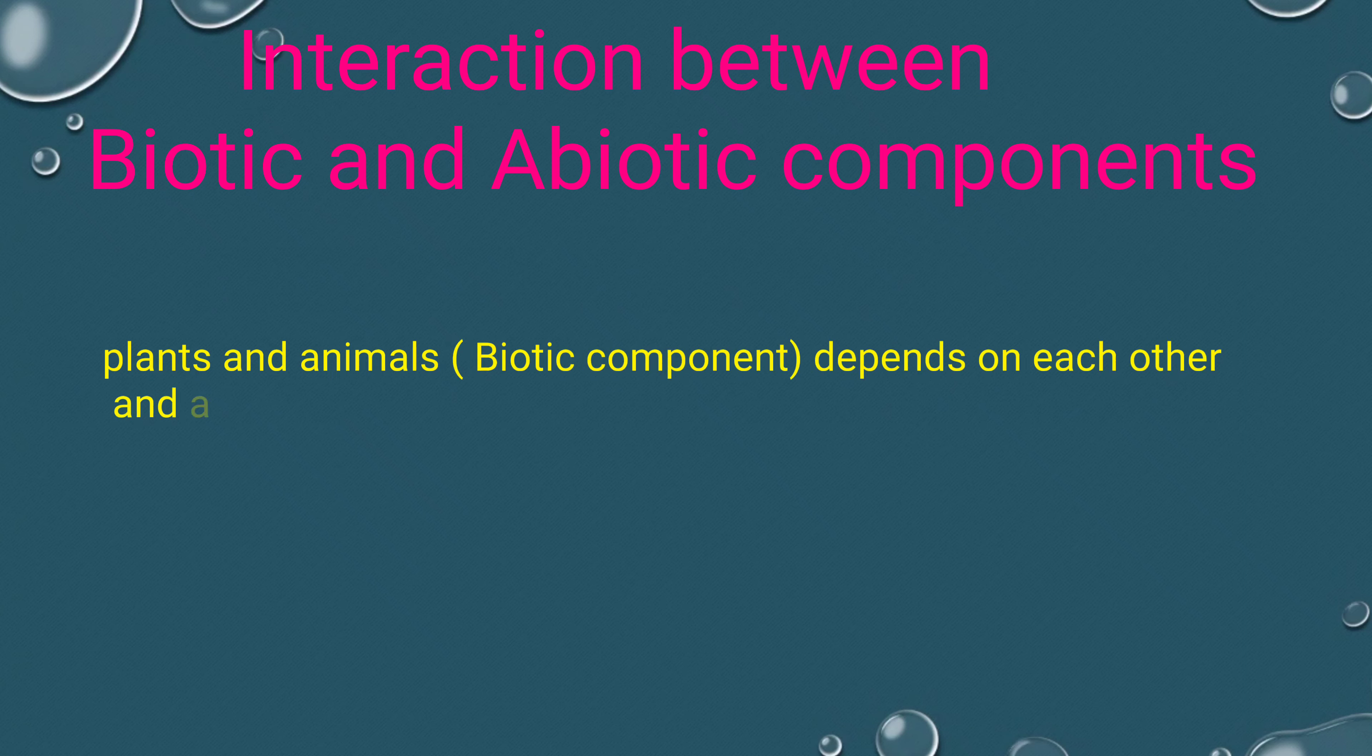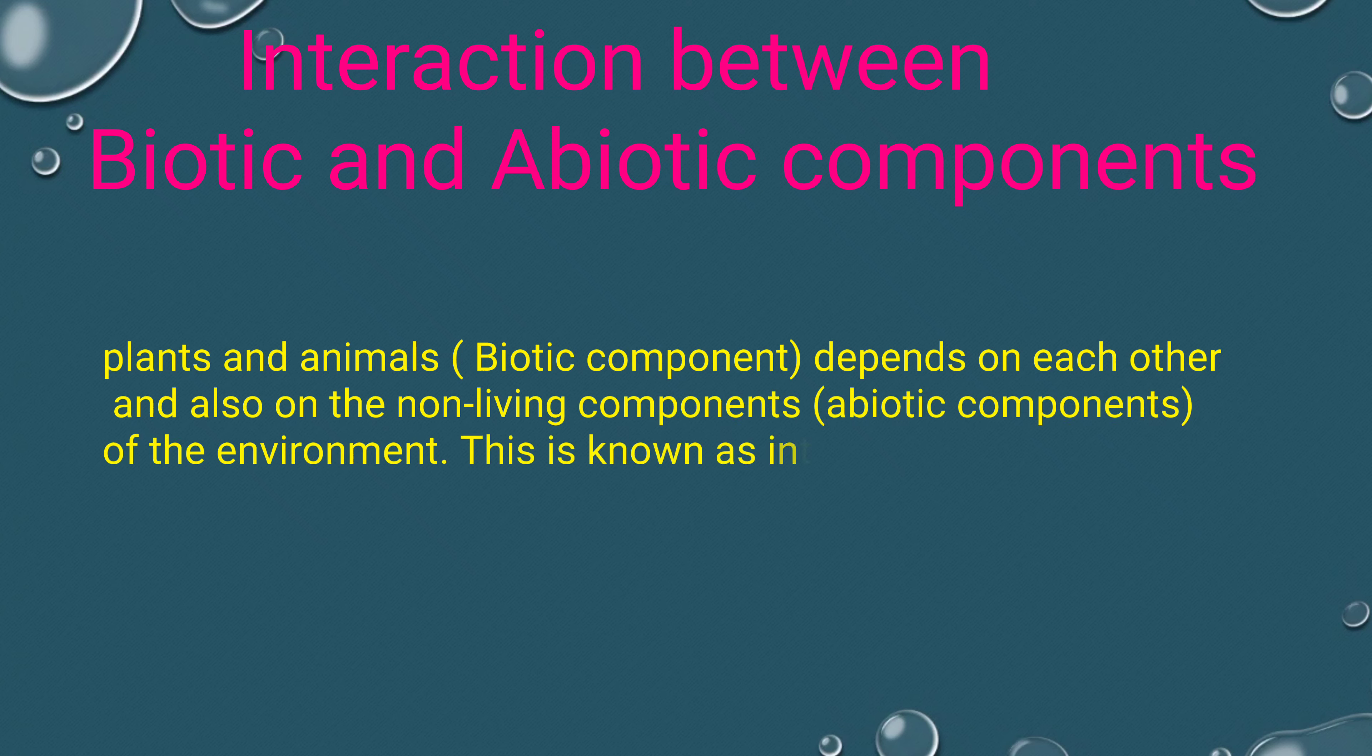Interaction between biotic and abiotic components: Plants and animals depend on each other and also on the non-living components of the environment. This is known as interdependence.